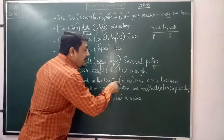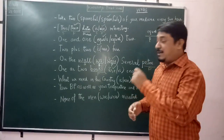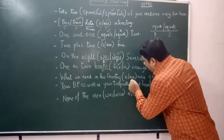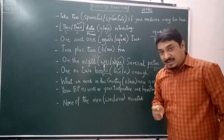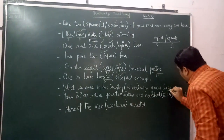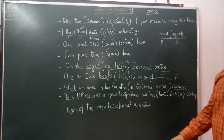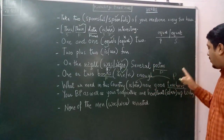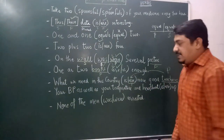'What we need in this country is / are more good teachers.' This is a very true statement — good teachers are quite scarce. Although 'country' is singular, the key word here is 'teachers', which is plural. A plural complement takes a plural verb. So the right answer is 'what we need in this country are more good teachers'.